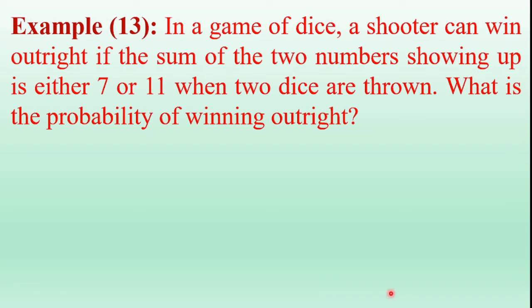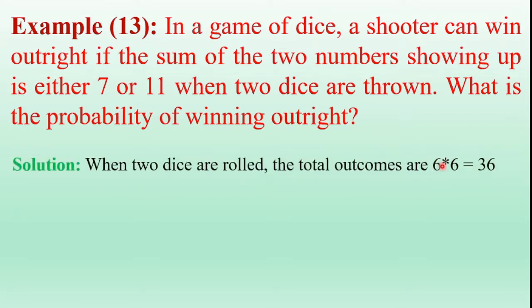Hi everyone, welcome back to precaution tutorials. In this video I am going to discuss one more example of probability. The given example is: in a game of dice, a shooter can win outright if the sum of the two numbers showing up is either 7 or 11 when two dice are thrown. What is the probability of winning outright?